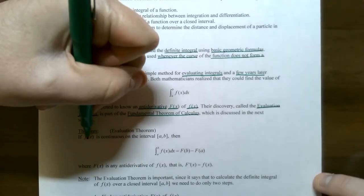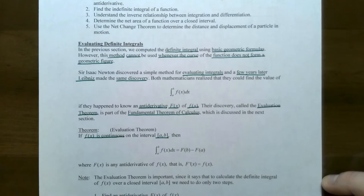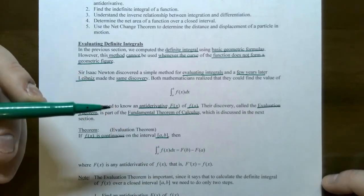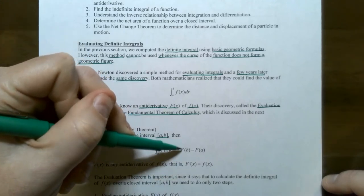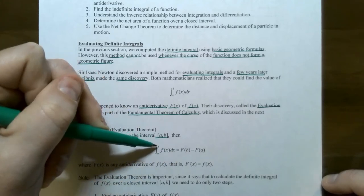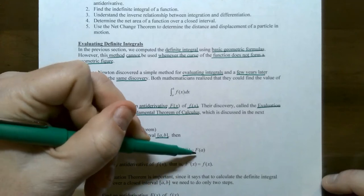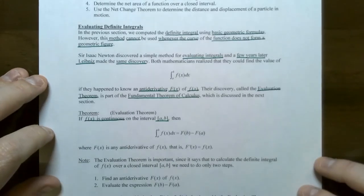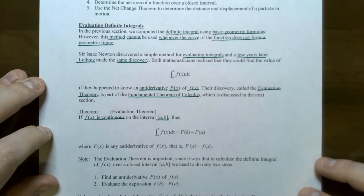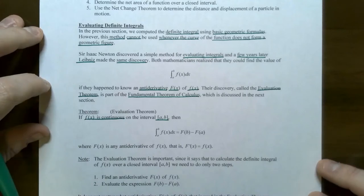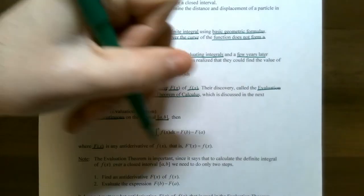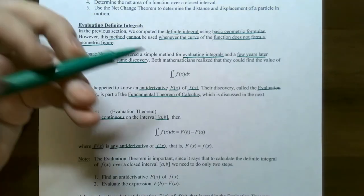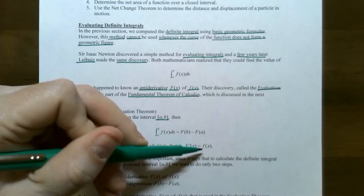So let's start with the evaluation theorem and see what it actually states. You have a function that is continuous on a closed interval [a, b]. You can evaluate the definite integral from x equals a to x equals b of the integrand f of x by finding an antiderivative capital F of the integrand evaluated at the upper limit of integration, which is x equals b. Then subtract — take the antiderivative and evaluate at the lower limit of integration, which is x equals a. Track those two values and you'll find out the area under the curve bounded by f of x between x equals a and x equals b and the x-axis.